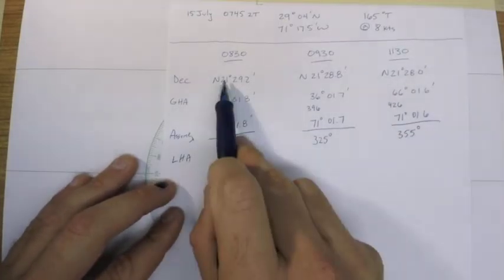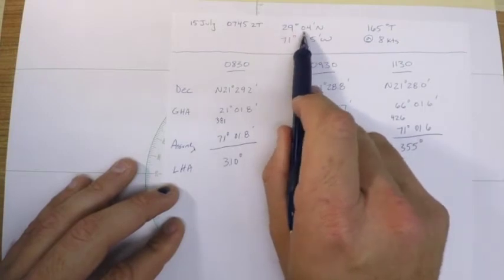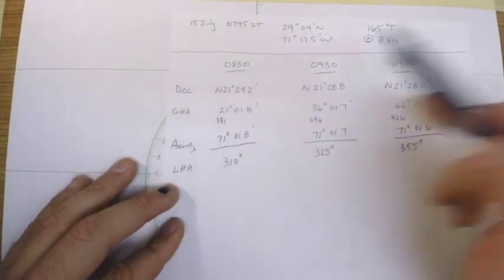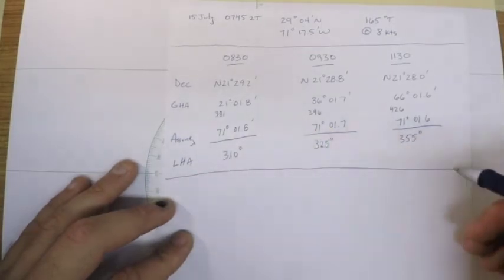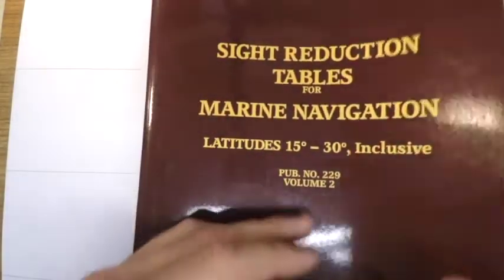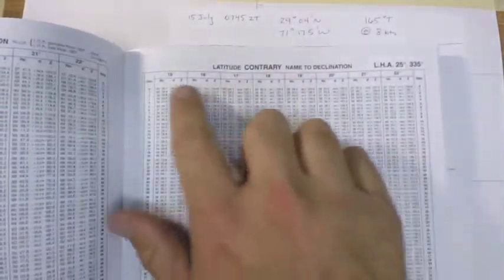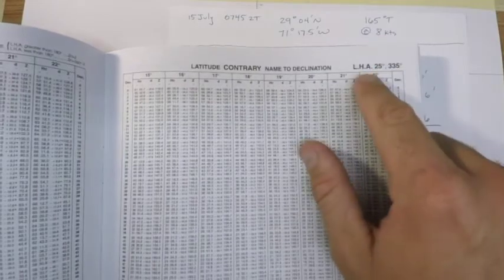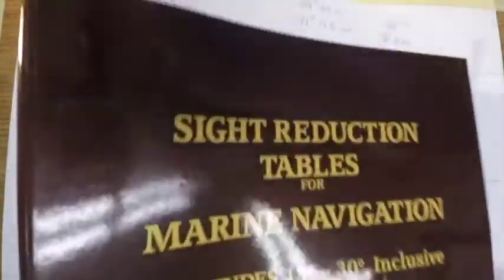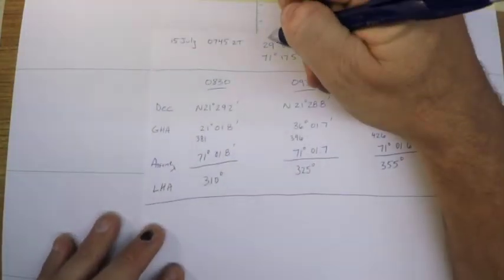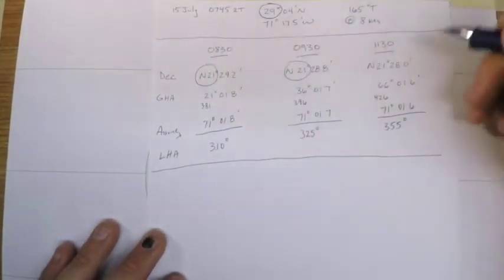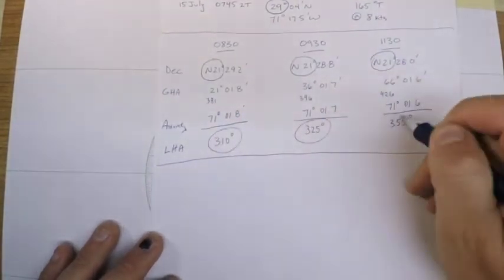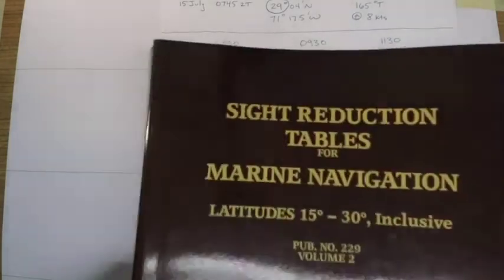So now I have LHA, I have declination, and I have my latitude whole values of it. Notice there's a little hanger on in that case and that'll need to be corrected later on, but I have what I need to get into HO 229. In HO 229, the things that I need in order to use this are latitude, declination, and local hour angle. To clarify, I have a latitude of 29 degrees for each of the three sightings, I've got a declination of 21 degrees for each of the three sightings, and I have an LHA of these here.